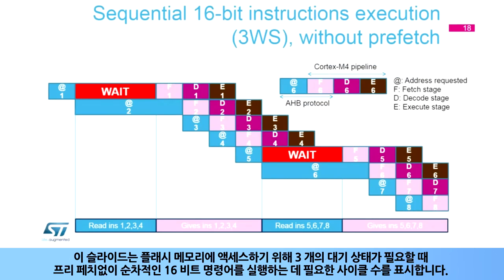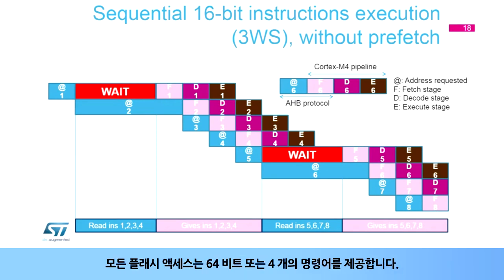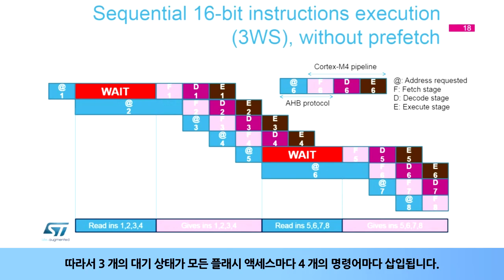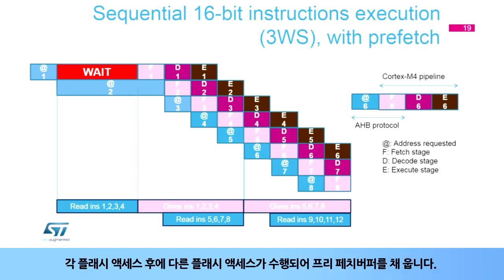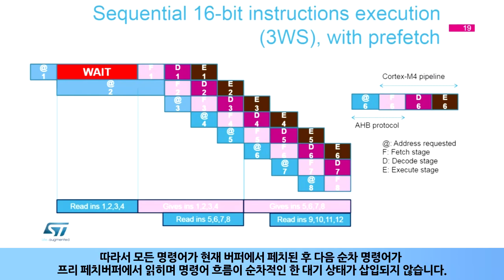This slide shows the number of cycles needed to execute sequential 16-bit instructions without prefetch when three wait states are needed to access the flash memory. After each flash access, another flash access is performed to fill the prefetch buffer. So, after all instructions are fetched from the current buffer, the next sequential instruction is read from the prefetch buffer and no wait state is inserted as long as the instruction flow is sequential.